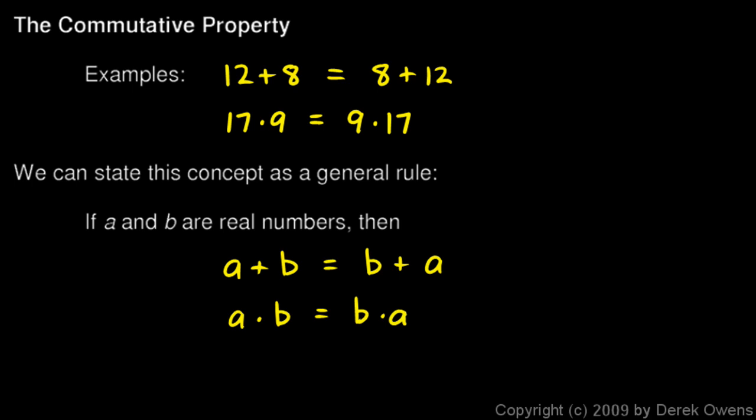This is called the commutative property. A mathematician would say that addition is commutative—addition of real numbers is commutative—and multiplication of real numbers is commutative.